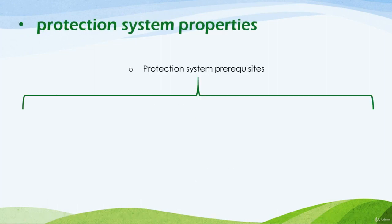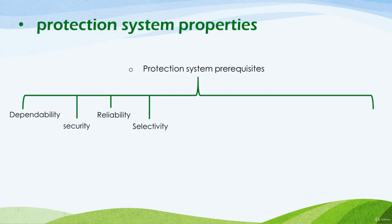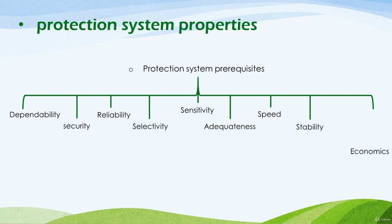If we collect the different properties discussed for any protection system, they are: the dependability, which measures the degree to which we can depend on the protection system; the security, which measures how secure the protection system is; the reliability, which measures how reliable the protection system is; the selectivity, which measures how the protection system selects the right action and which relay trips the circuit; the sensitivity, which measures how sensitive the protection system is to detect fault currents; and also other properties like adequateness, speed, stability, and economics. We will illustrate all nine properties in detail in this tutorial and the next one.